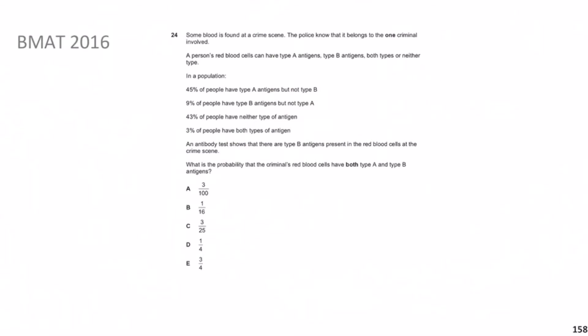Some blood is found at a crime scene. The police know it belongs to the one criminal involved. A person's red blood cells can have type A antigens, type B antigens, both, or neither — the ABO blood system. In the population: 45% have A but not B, 9% have B but not A, 43% have neither, and 3% have both. An antibody test shows type B antigens are present. What is the probability the criminal's blood has both type A and type B?